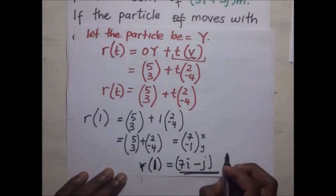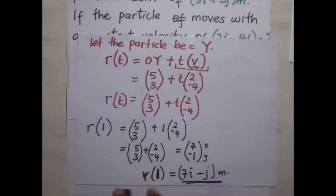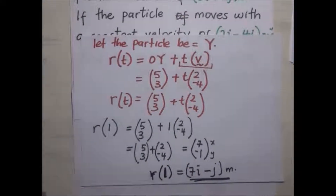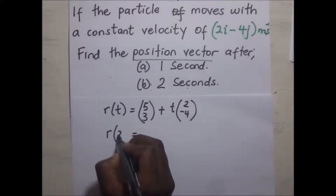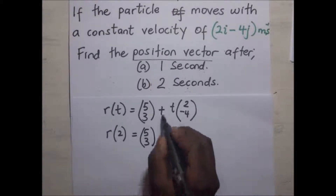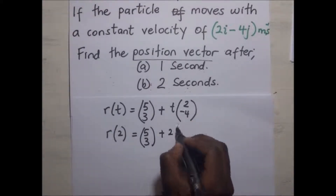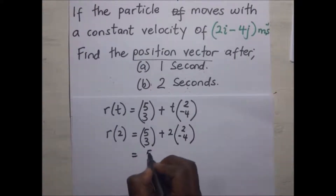Now to find the position vector after two seconds, we are still going to substitute the value of t — we just put the number 2. So r(2) is going to be equal to [5, 3] plus 2 times [2, -4].